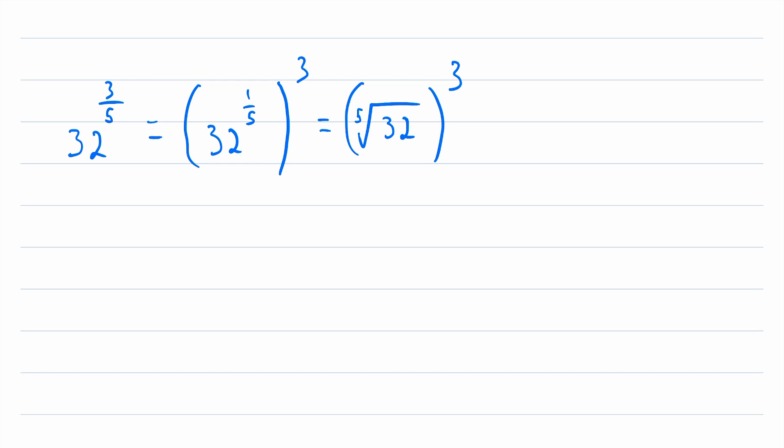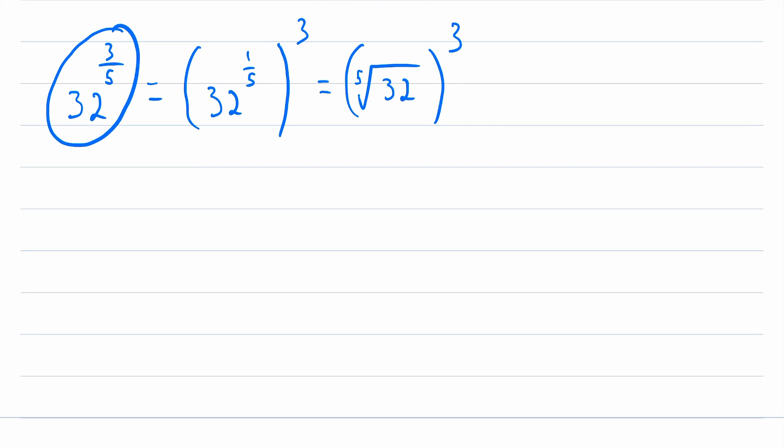And it actually doesn't matter if you take the root first, or if you raise to the power first. To see that, notice that we could also rewrite 32 to the power of 3 over 5 like this: 32 to the power of 3 to the power of 1 over 5. Just as before, we could multiply these exponents together, we know that we'd get what we started with. So then, we could rewrite this as 32 to the power of 3, and then that one-fifth exponent tells us we're taking the fifth root of this. So these are equal.